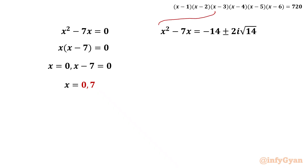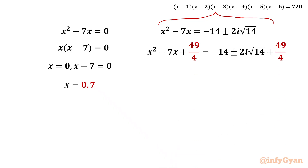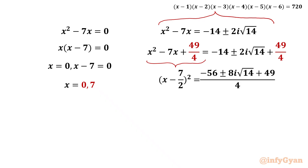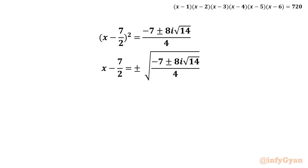Now we solve the second quadratic equation using completing the square again. The coefficient of x is 7; half of 7 is 7/2, and its square is 49/4. Adding 49/4 to both sides, the left-hand side becomes (x − 7/2)². The right-hand side simplifies to (−56 + 49 ± 8i√14) / 4 = (−7 ± 8i√14) / 4. We then take the square root of both sides.